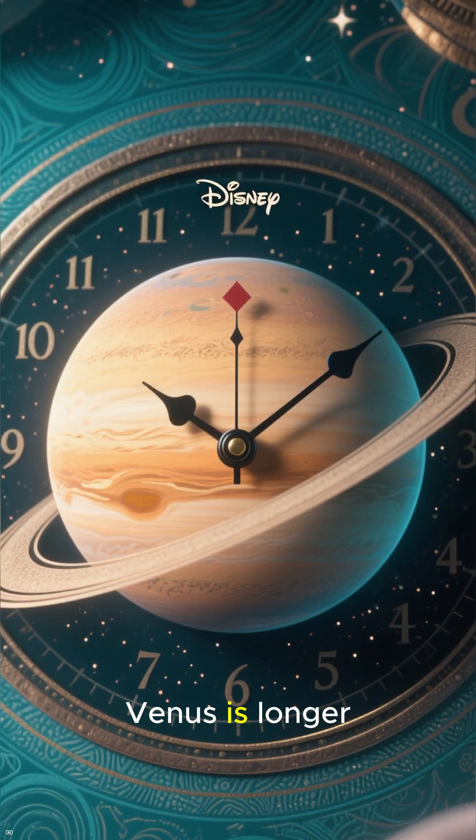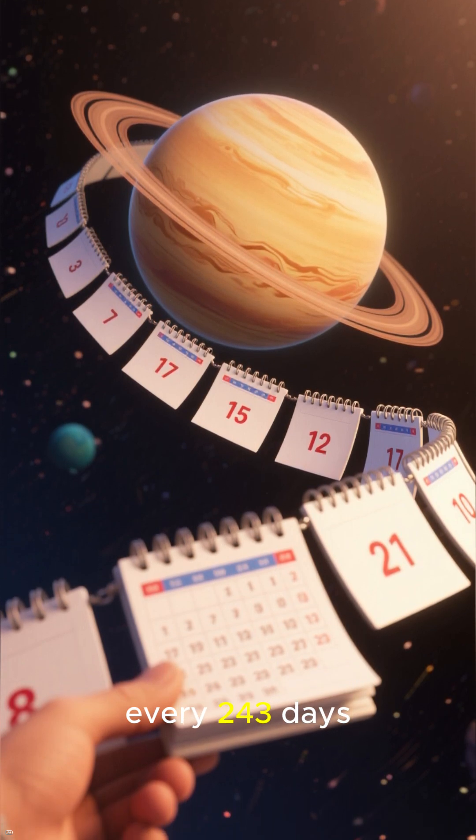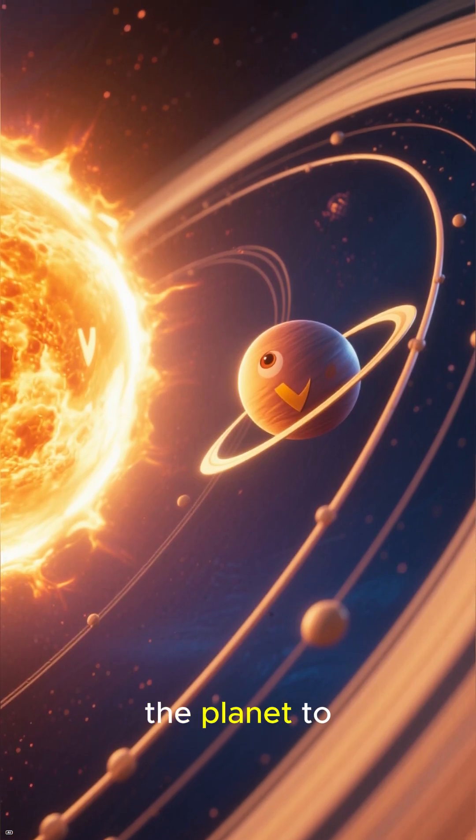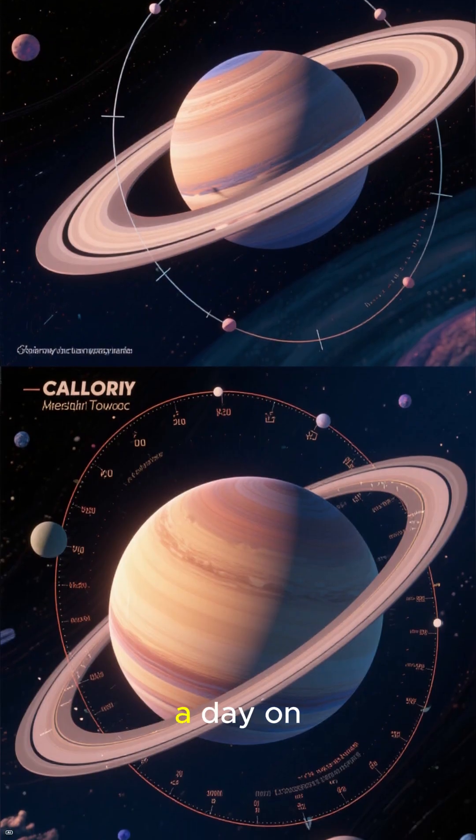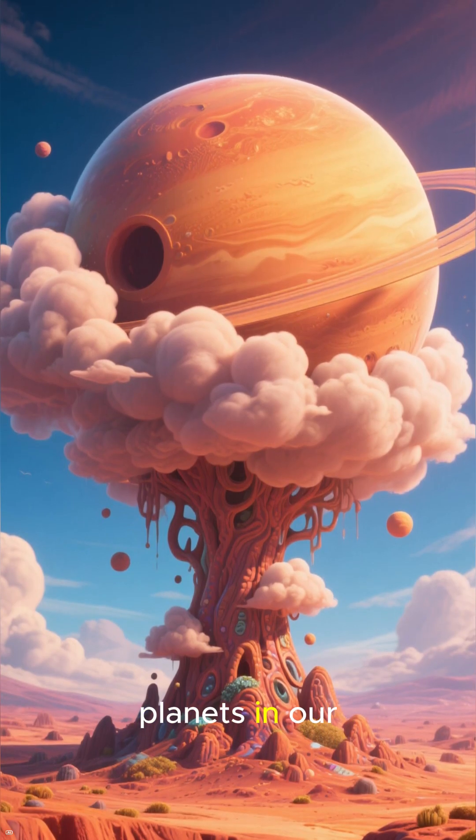Number 4. A day on Venus is longer than a year. Venus rotates on its axis once every 243 days, but it takes 225 days for the planet to orbit the sun. This means that a day on Venus is longer than its orbital period, making it one of the strangest planets in our solar system.